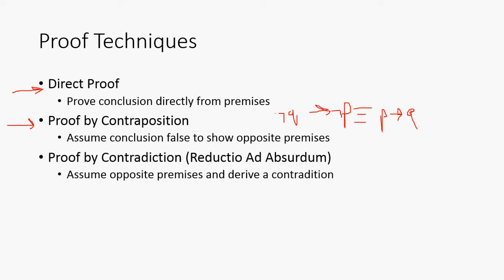And then finally, we have our proof by contradiction, also known as reductio ad absurdum. This is where we assume premises that are the opposite, and then we derive a contradiction. That's proof by contradiction, and we'll show you that in a second.